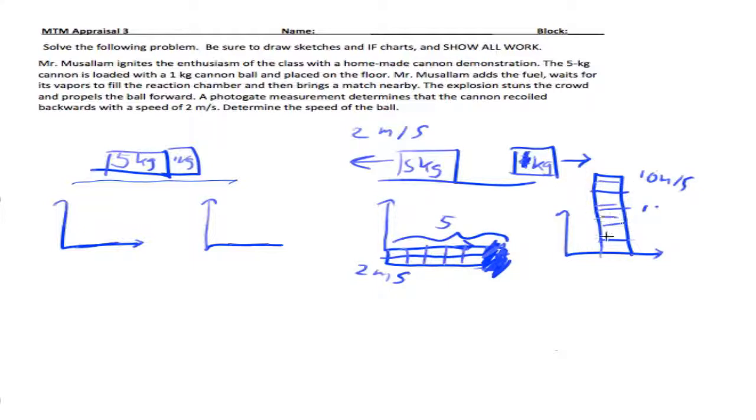Let me just go ahead and double check these numbers. So, I have M1V1 plus M2V2 initial equals M1V1 final plus M2V2 final.